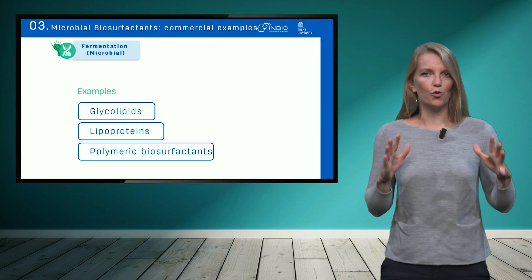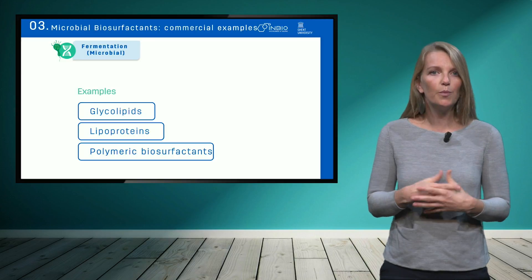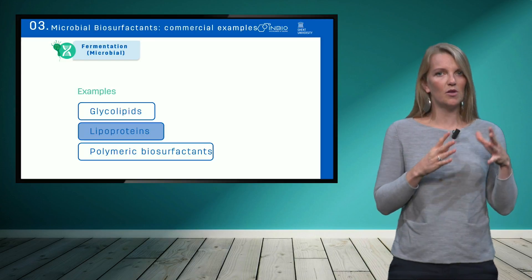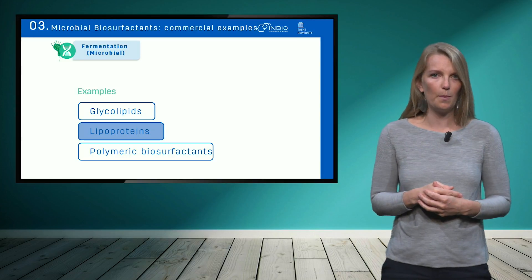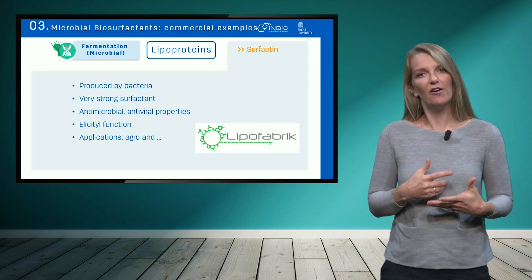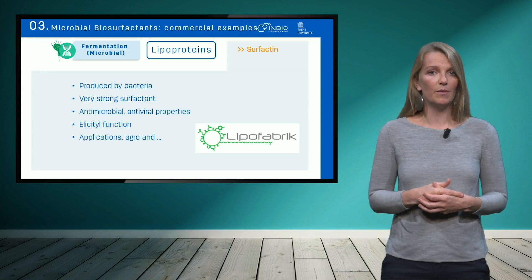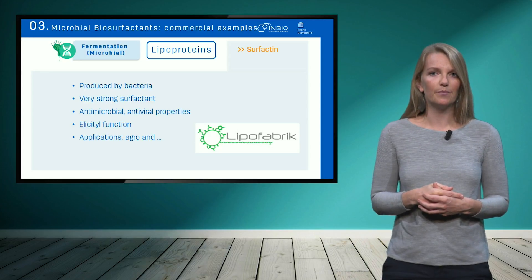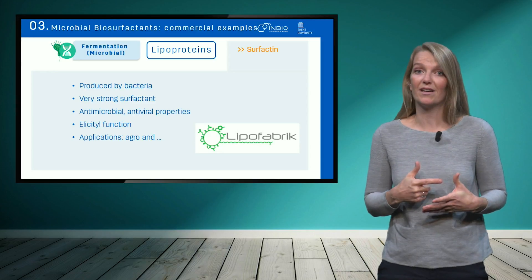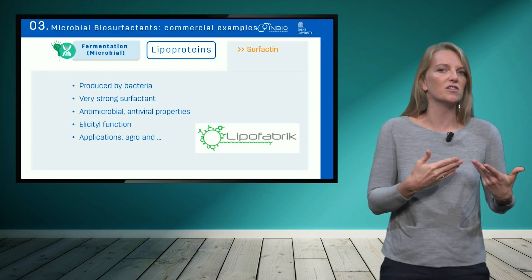Going back to the groups of microbial biosurfactants, the second group are lipoproteins, consisting of a protein coupled to a lipophilic molecule. Surfactin is a lipoprotein and is a very potent surfactant. The commercialization in Europe is done by a company called Lipofabric. However, commercialization remains very low, as the product is quite expensive, also because the production process is not yet efficient enough.